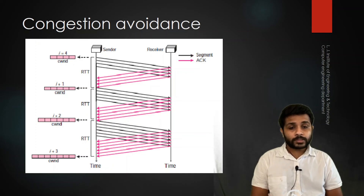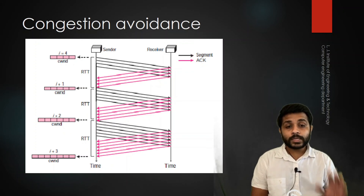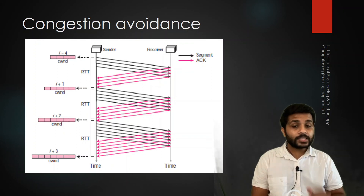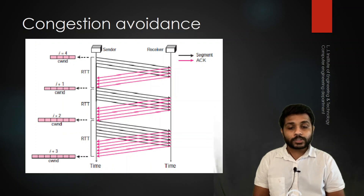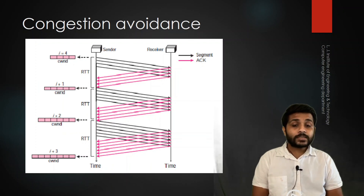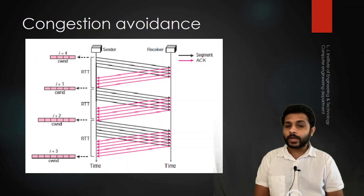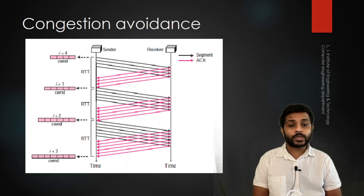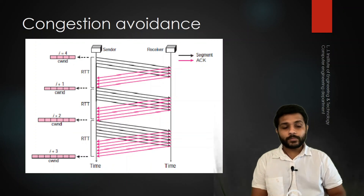In Congestion Avoidance, when the congestion becomes so severe, there will be packet drops. When there is a packet drop, the sender will stop sending any packets. The sender detects severe congestion when a packet drop or acknowledgement drop occurs — it then understands the congestion is severe. It will stop sending packets and start from the beginning again.